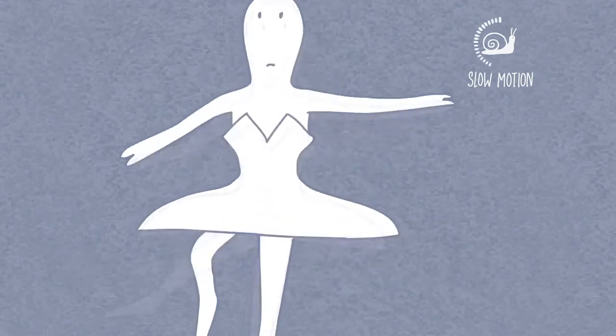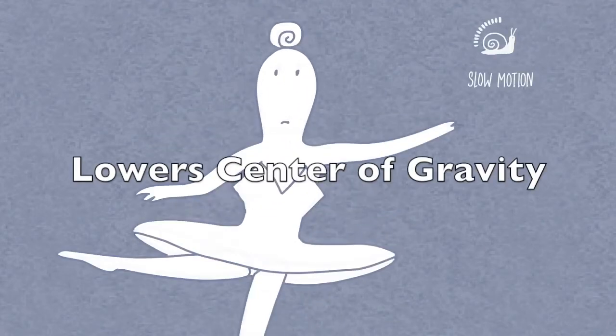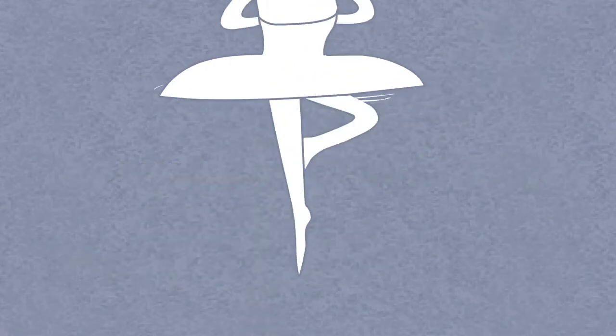During this time, the dancer opens up her arms to help keep her balance as it lowers the center of gravity. This helps the dancer continue spinning despite the friction present.